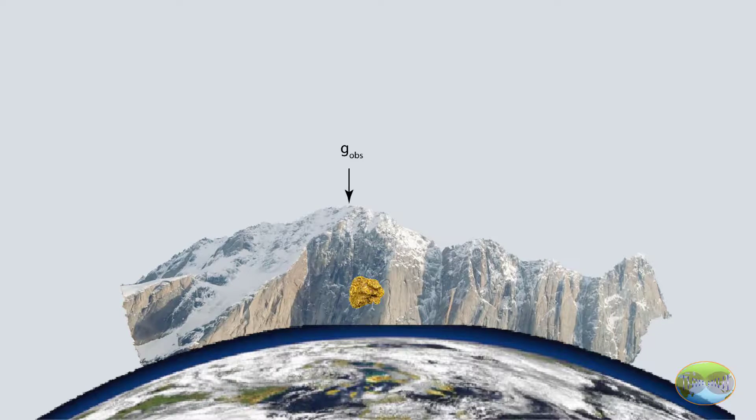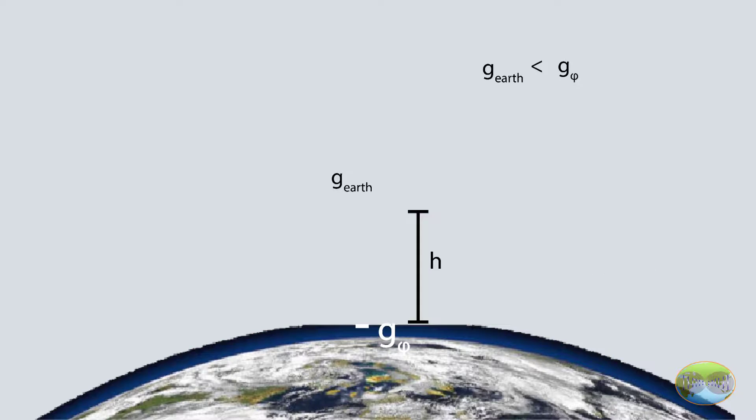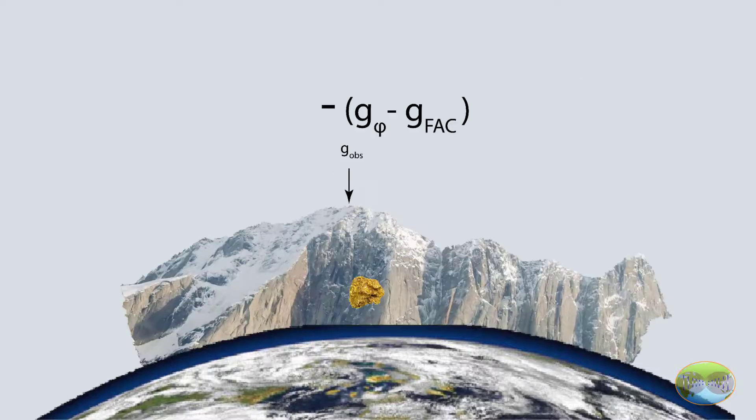but our observation point is at a height above the mean sea level. So we have actually reduced more than we should have, as gravity at the surface of spheroid is more than what it would be at a height above it. So by applying free air correction, we are actually correcting the latitude correction. In this way, the free air correction always becomes positive.